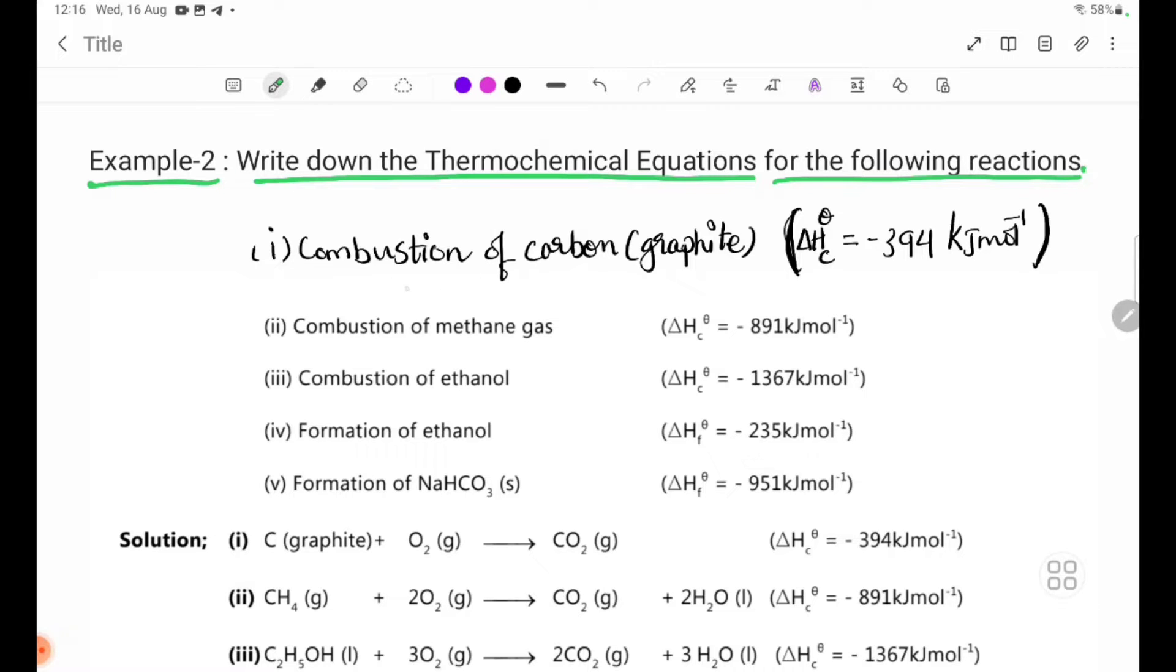Number 1: Combustion of carbon graphite, delta H theta C equals minus 394 kilojoules per mole. Number 2: Combustion of methane gas. Number 3: Combustion of ethanol. Number 4: Formation of ethanol. Number 5: Formation of NaHCO3 solid.